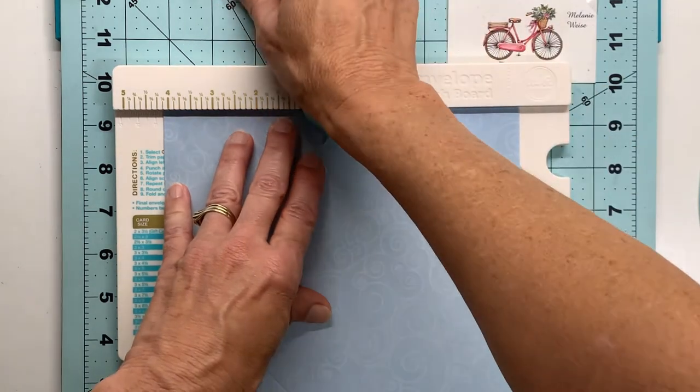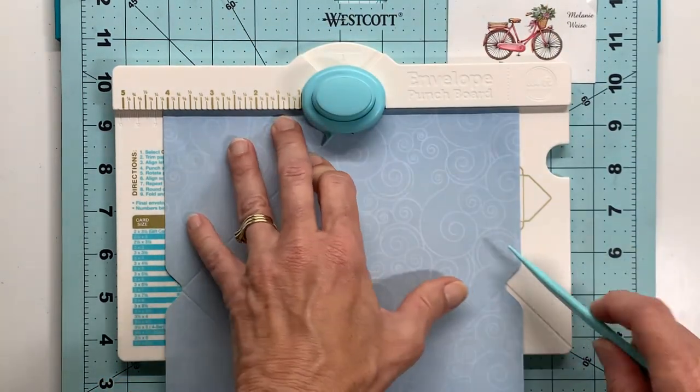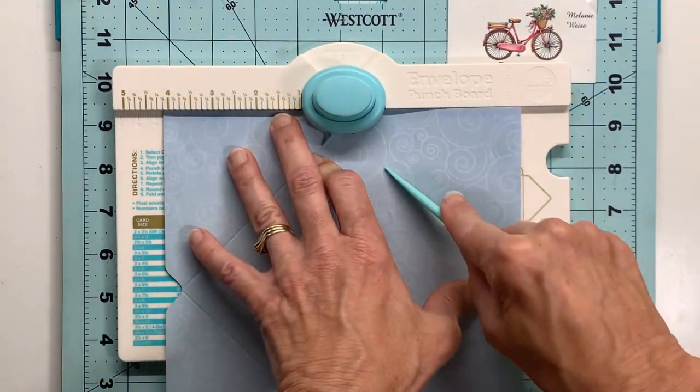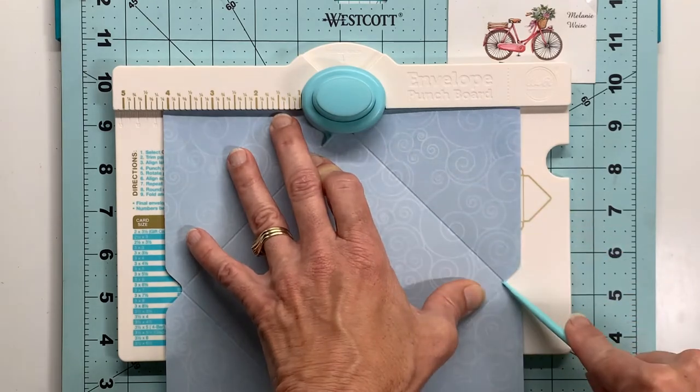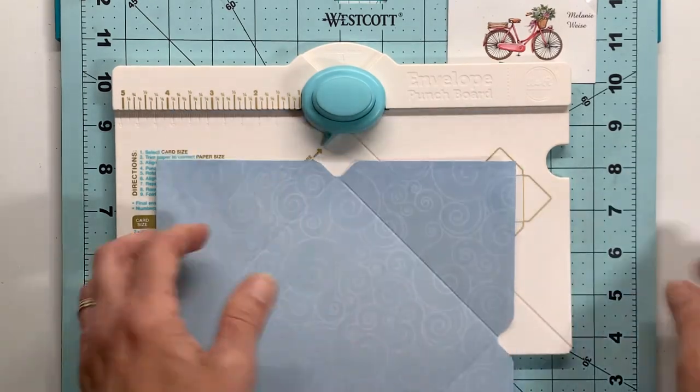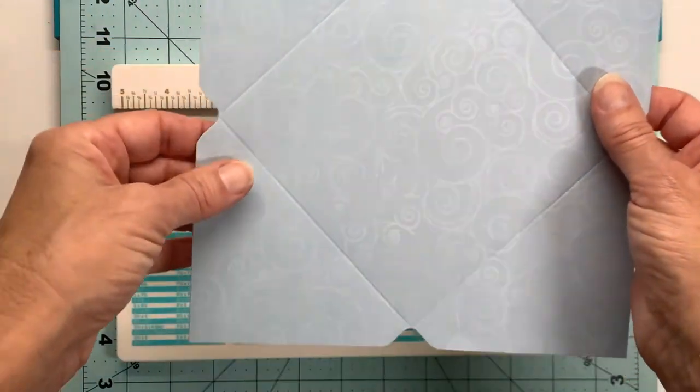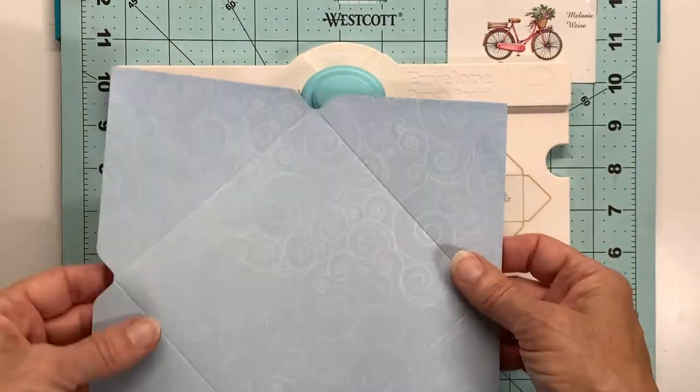This is my last one right here and as you can see the foundation of my envelope is complete and looks exactly like the diagram depicted on the front of the envelope punch board.